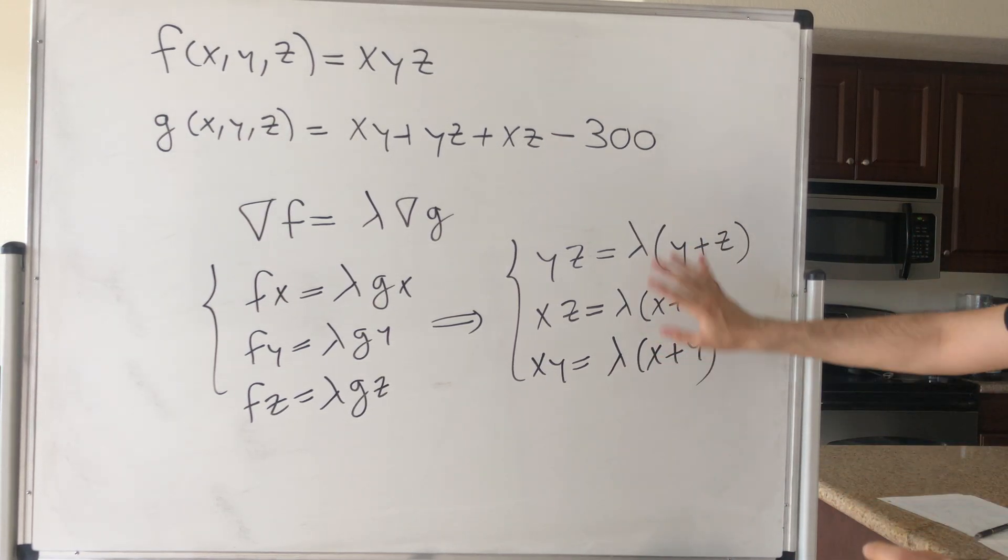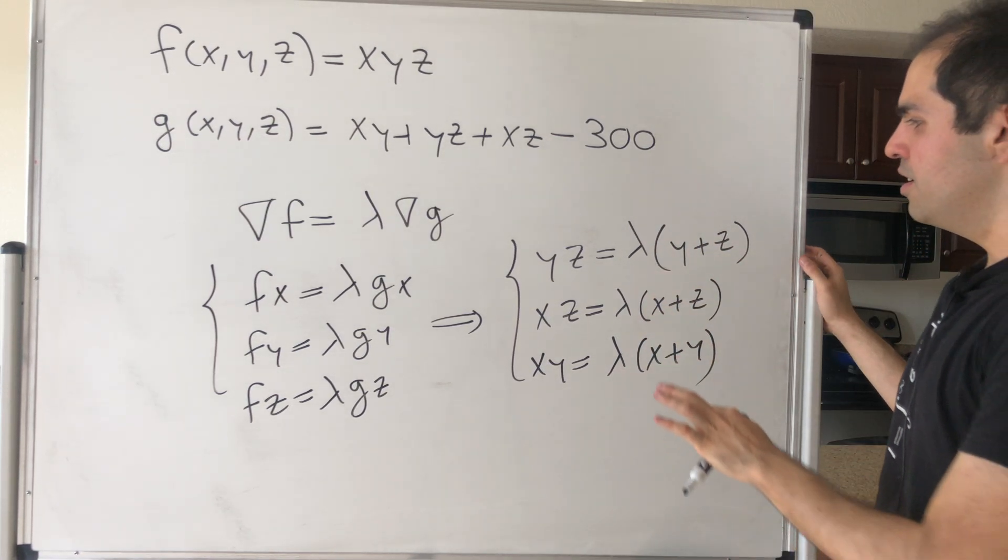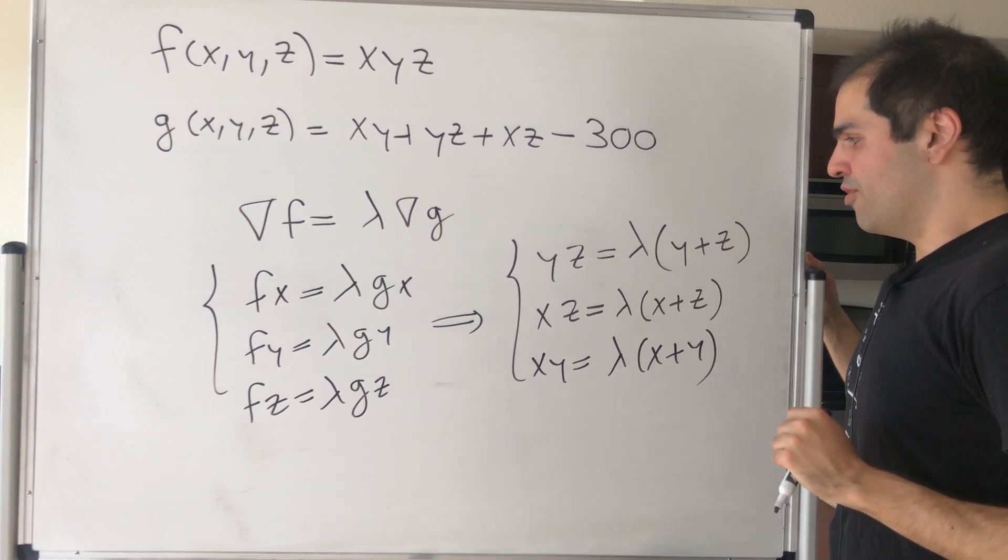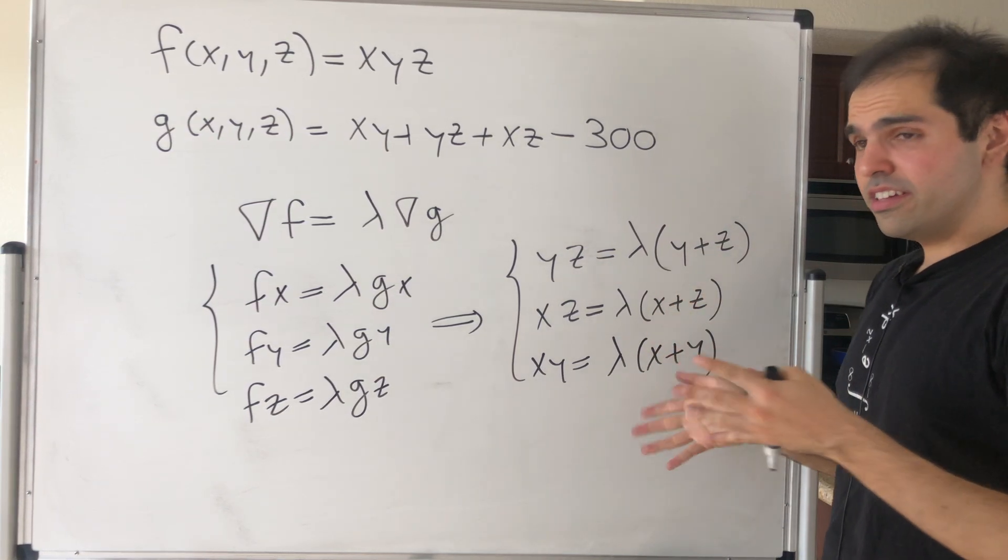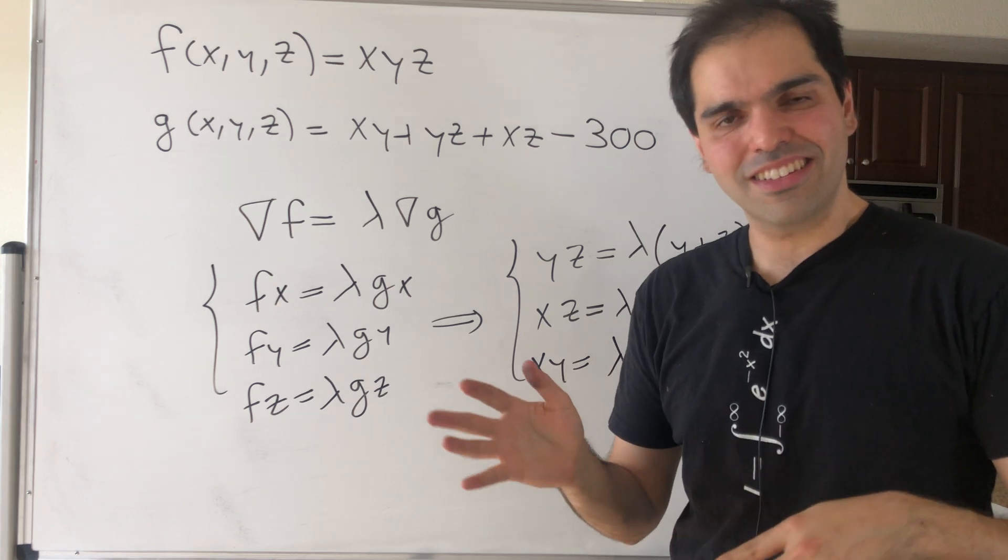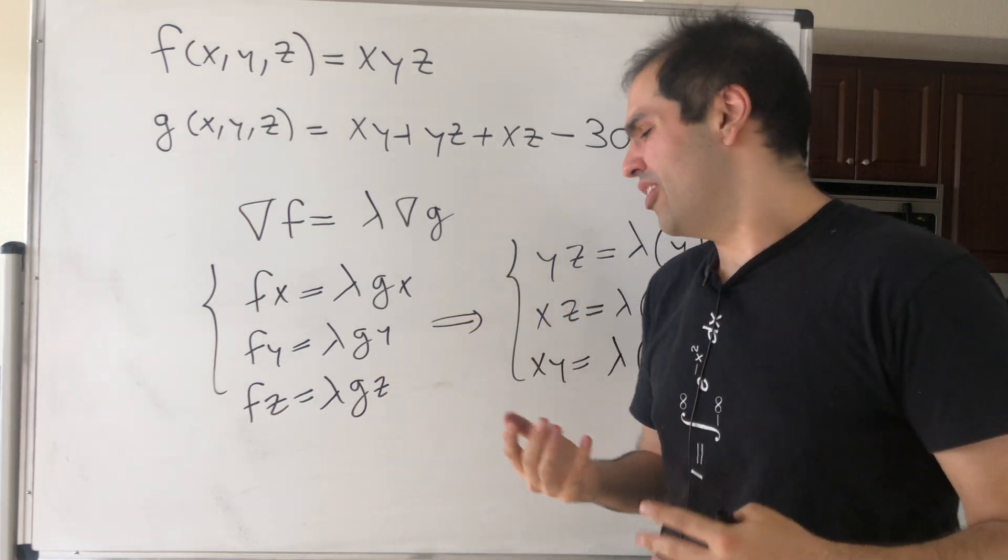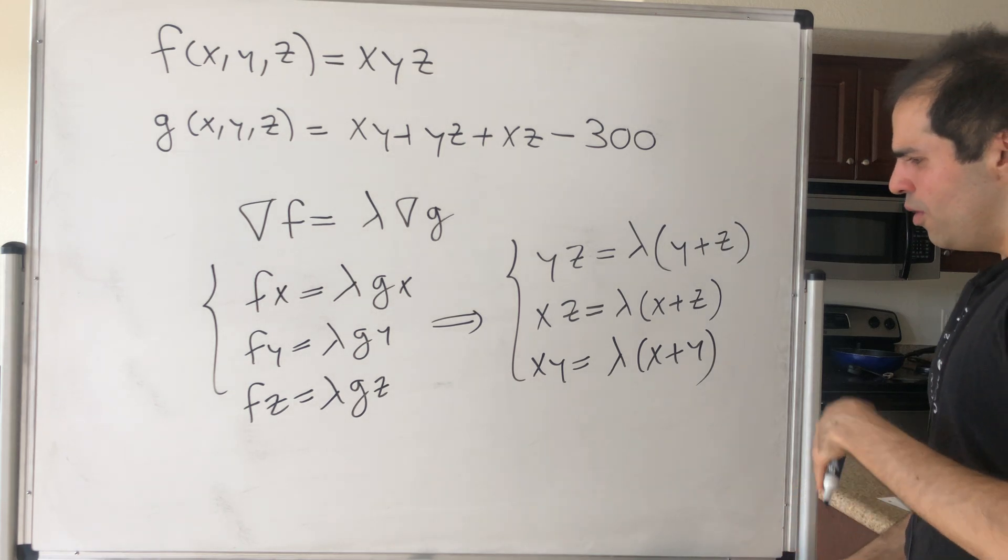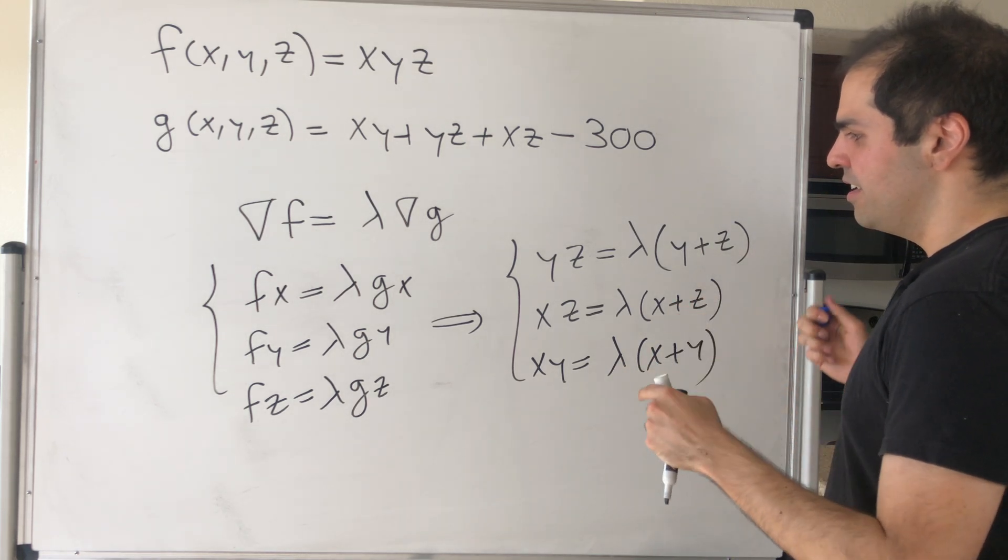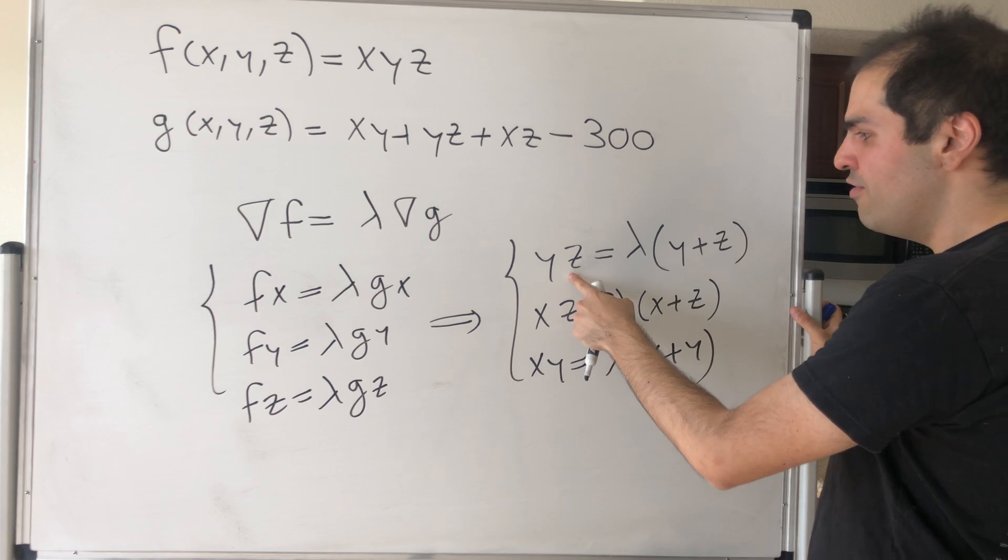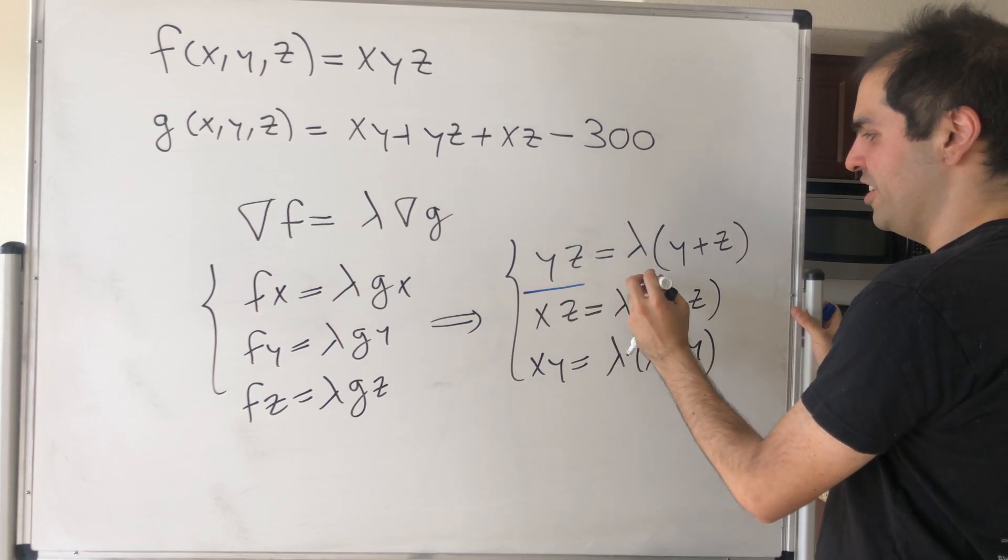And don't forget we also have the constraint which we don't need for now. Here's the thing: Lagrange multipliers is quite an art, it depends on the problem you want to solve. But what we can do in this case is maybe divide this equation by this equation and see what happens.